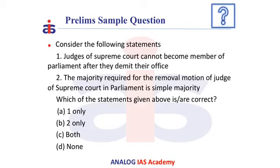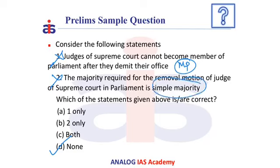Now let us solve this question. Consider the following statements: first, judges of the Supreme Court cannot become a Member of Parliament after they demit their office; second, the majority required for the removal motion of a judge of the Supreme Court in Parliament is a Simple Majority. The correct answer is D — None. As seen recently, the ex-Chief Justice of India, Mr. Ranjan Gogoi, was nominated as a Member of Rajya Sabha, so the first statement is wrong. The second statement is also wrong because the majority required is a Special Majority, not Simple Majority. Therefore, the correct answer is D — None.